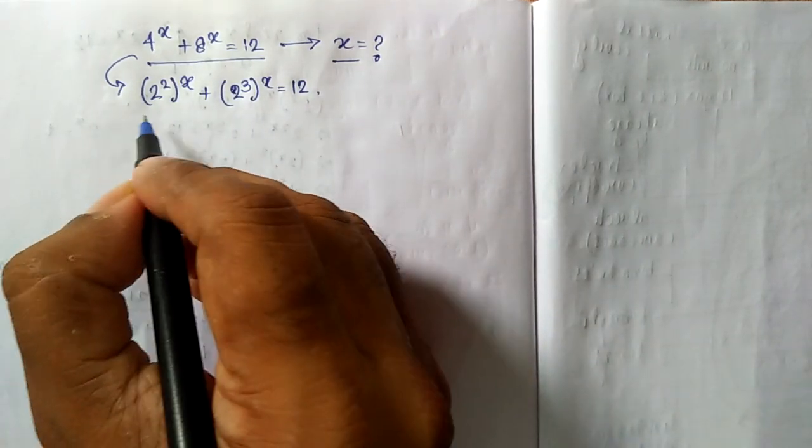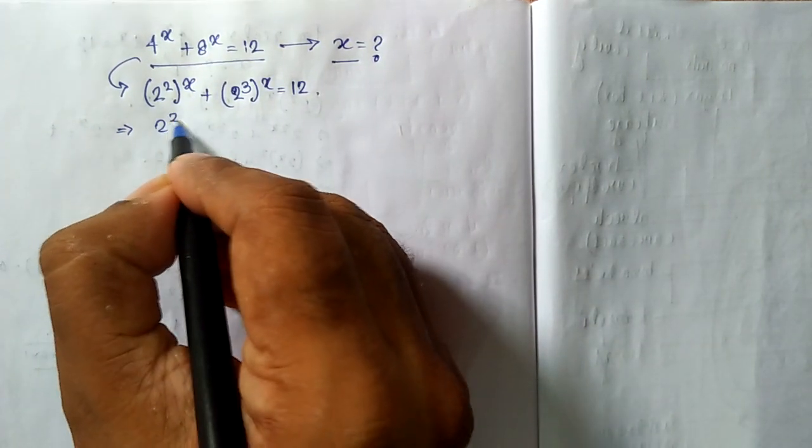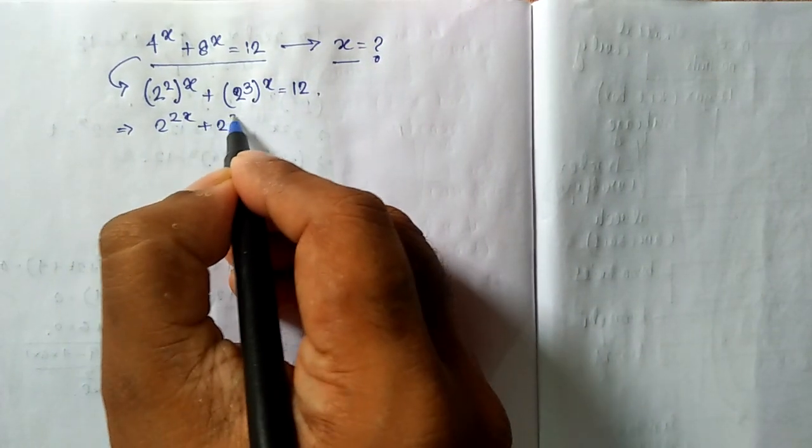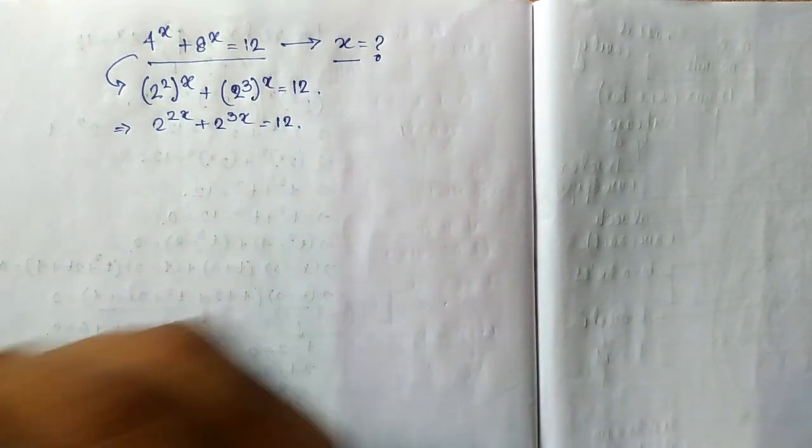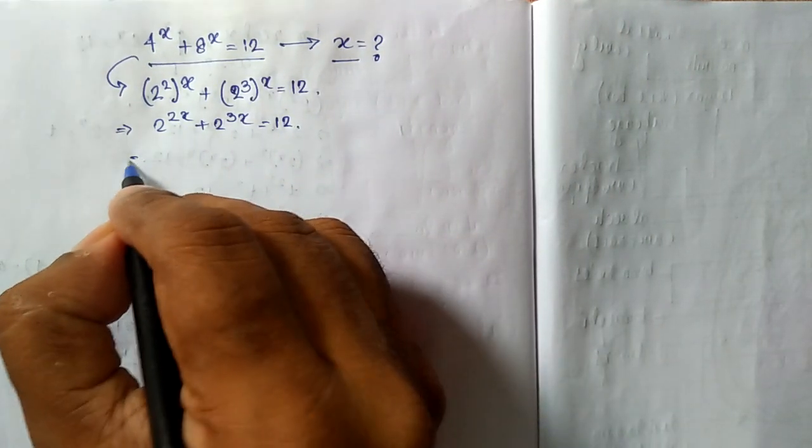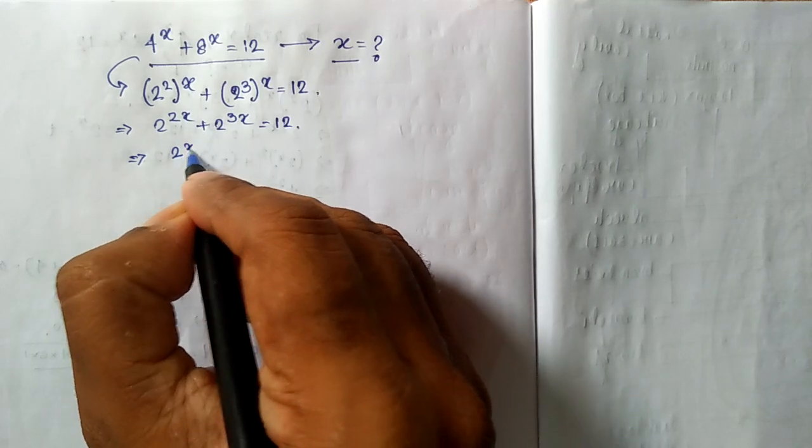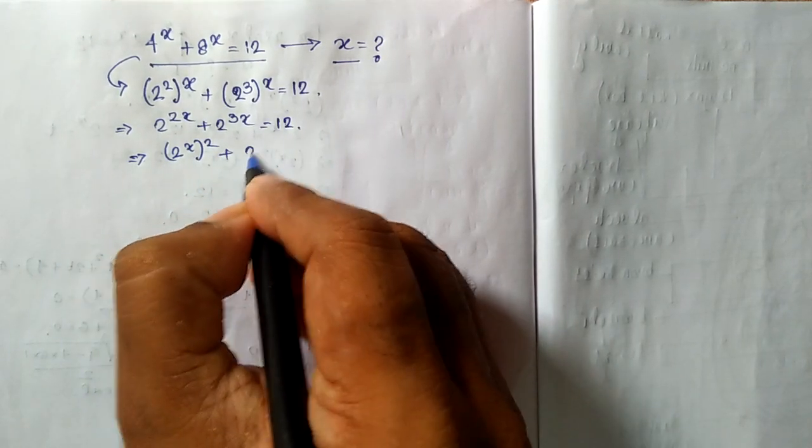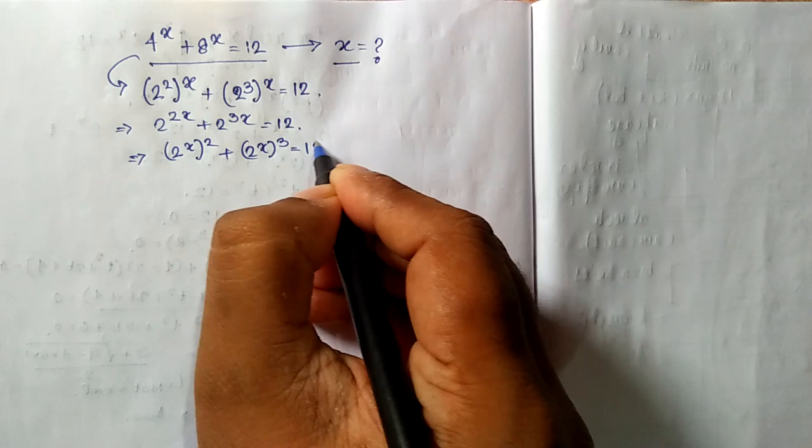What does that mean? That means 2 to the power 2x plus 2 to the power 3x equal to 12. Now I can also write this expression as 2 to the power x whole squared plus 2 to the power x whole cubed equal to 12.